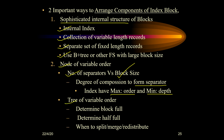For a tree of variable order, the main things to keep in mind are how to determine when a block is full, when it is half full, and when to go for splitting, merging, or redistribution during insertion, deletion, or redistribution operations. These are the main considerations when handling a B+ tree with variable order nodes.